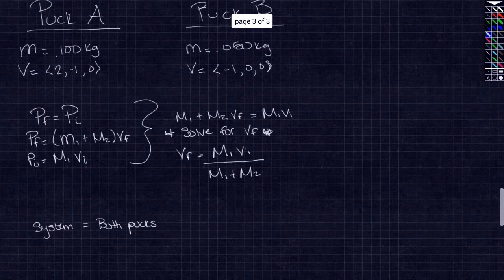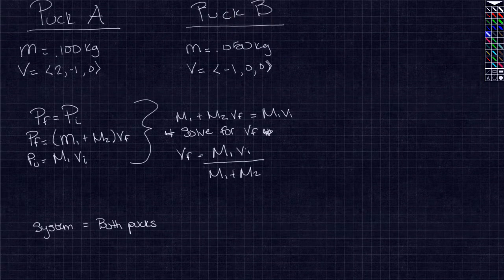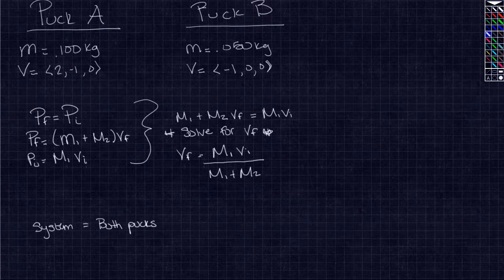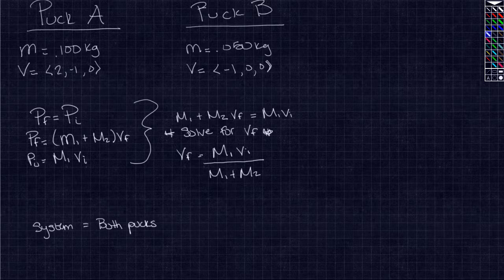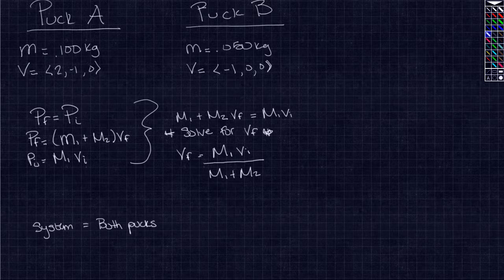The given information we have for Pug A is mass equals 0.100 kilograms. The velocity is the vector 2, negative 1, and 0. For Pug B, the mass is 0.050 kg and the velocity is negative 1 in the x direction.